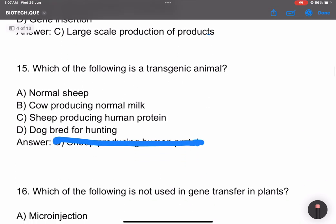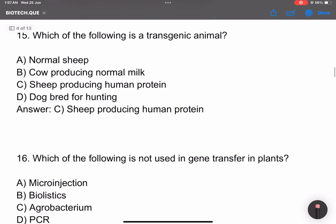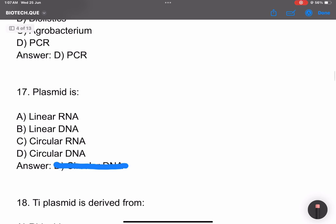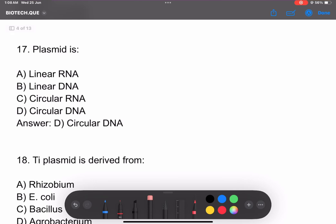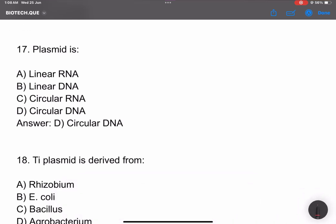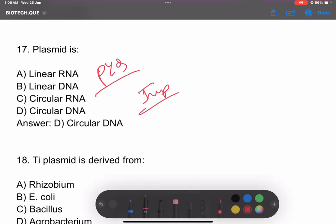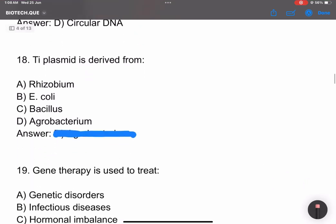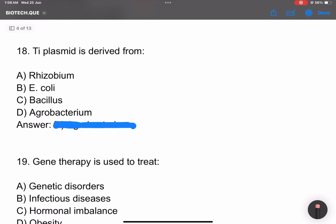Question 13: What is the role of bioreactors? For large-scale production of products and downstream processing. Which is a transgenic animal? Sheep producing human protein. Which of the following is not used in gene transfer? PCR. Plasmid is circular, not linear. This is an important question.